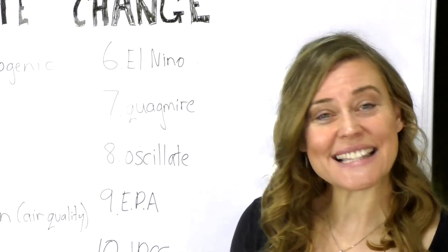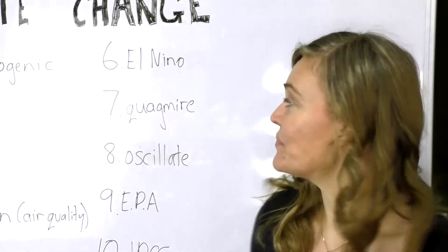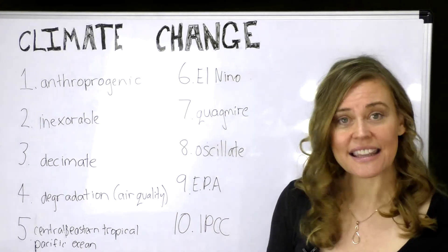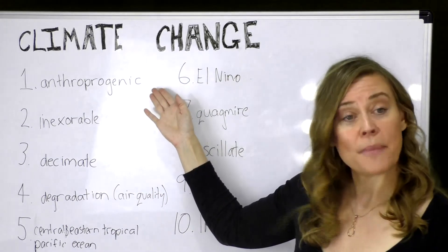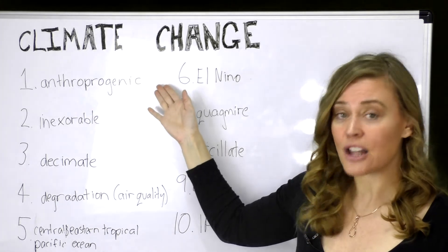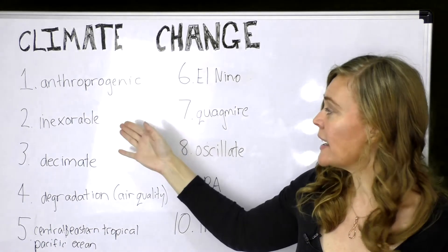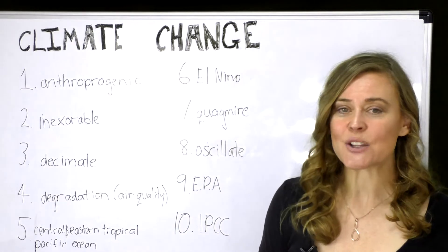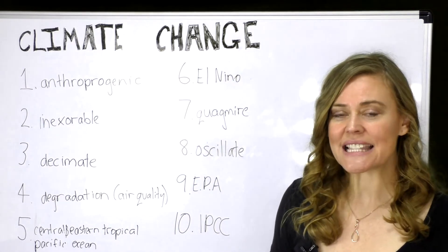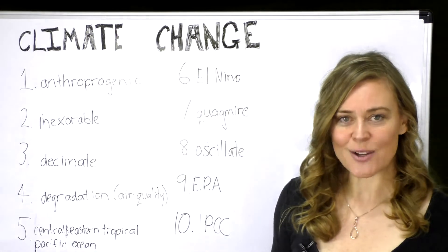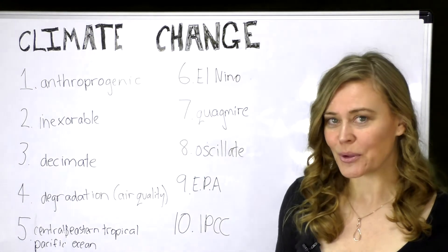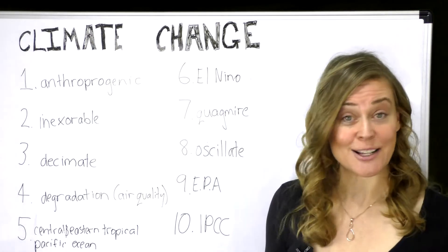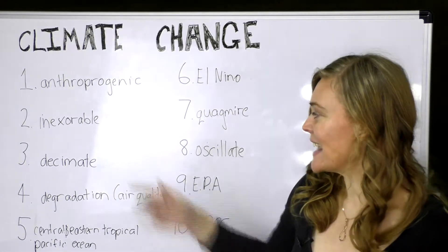The first word is 'anthropogenic,' and anthropogenic means man-made climate change. Number two is 'inexorable,' and inexorable means something that is relentless or unstoppable — so perhaps your motivation for learning English is inexorable.